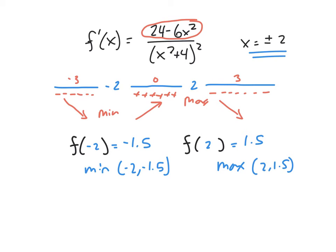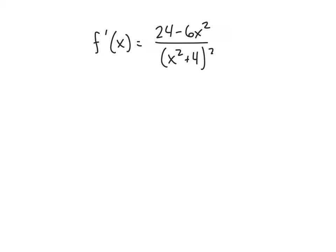Now we need to find inflection points and check for horizontal asymptotes. We'll use the second derivative to find inflection points and the intervals where the function is concave up and concave down. To locate the extreme values we avoided the second derivative, but for inflection points we have to take it. Don't panic — it's still a quotient, just with a little extra algebra. We'll need the quotient rule again.